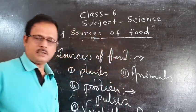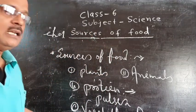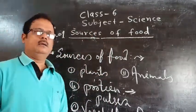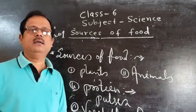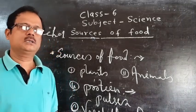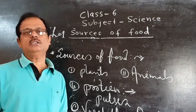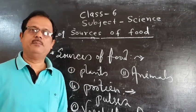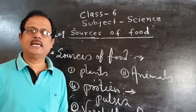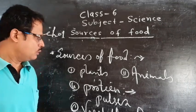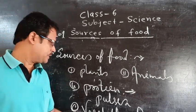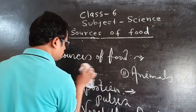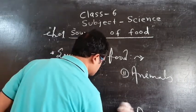From plants, we obtain vegetables and fruits. Vegetables and fruits are of great importance because they are called protective foods. They keep us healthy and protect us from different types of diseases. So we should try to include fruits and vegetables in our daily food.